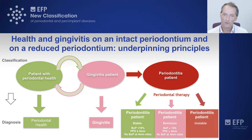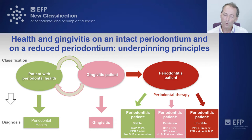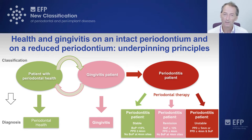The scenario we try to avoid is an unstable periodontitis patient — one who has probing pocket depths of 5mm or more, or 4mm pockets that actually bleed. That patient would be regarded as either unsuccessfully treated at those sites or as having had disease reactivate due to their risk of periodontitis.